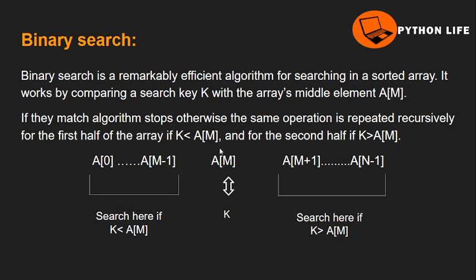If we search for a value, we compare it to the middle element A of M. If A of M equals the search key, we found it. If the search key is less than A of M, we search the left side in the next iteration. If it is greater, we search the right side.